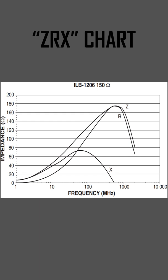A ZRX chart is one of the most important things within every ferrite bead datasheet. It shows the impedance of the bead versus frequency.